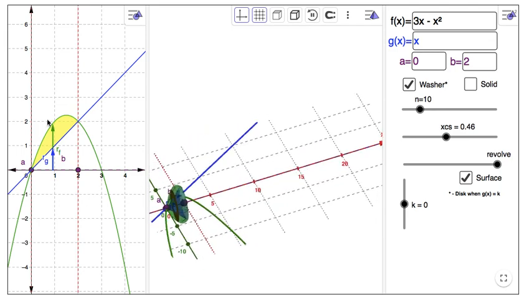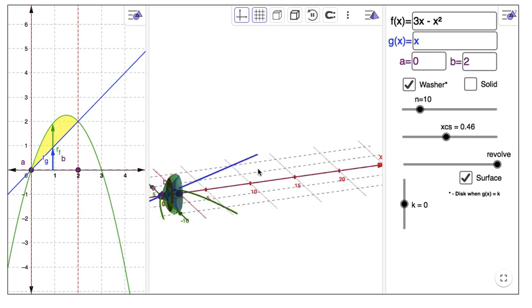There's a washer that we're going to take washer sections and define the volume of this.